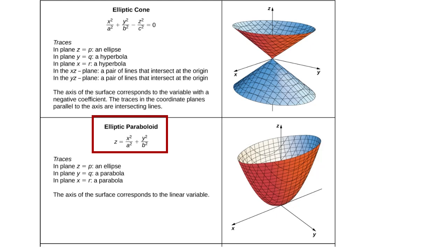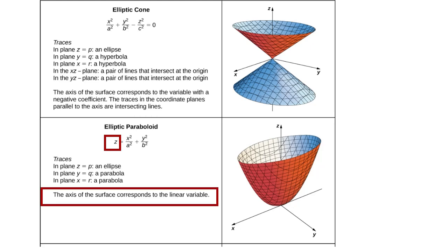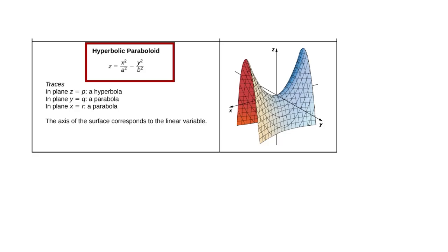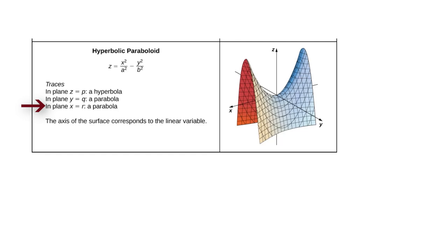Next is the elliptic paraboloid: z = x²/a² + y²/b². One variable does not have a square on it, and the axis of the surface corresponds to that linear variable. Going up the z-axis we see a series of ellipses, but intersecting with a plane parallel to the x-axis or y-axis gives a parabola. The final surface is the hyperbolic paraboloid: z = x²/a² − y²/b². In the z traces it's a hyperbola, but in the y and x traces it's a parabola.